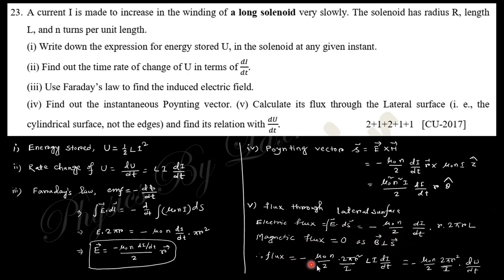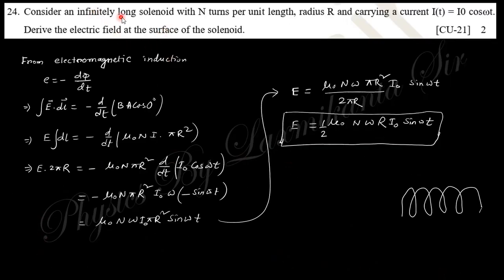The electric flux along the lateral surface is like that, but magnetic flux is zero because the magnetic field and the surface are perpendicular to each other. The flux is like that.